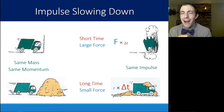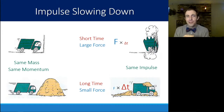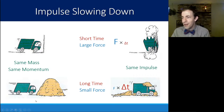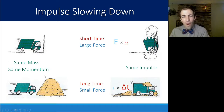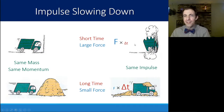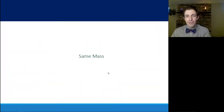We also talked about using impulse to analyze an object that is slowing down. We looked at a truck with the same mass moving at the same velocity, impacting either a wall or a stack of hay. It ultimately has the same impulse because it had the same momentum to begin with — we just changed how force and time work together, either a short time with large force, or long time with small force.